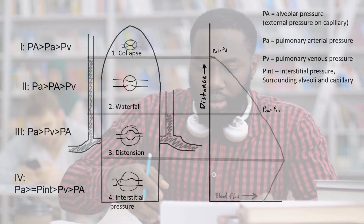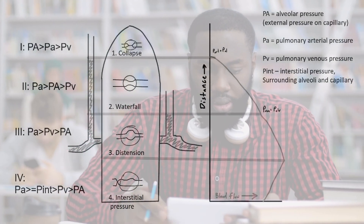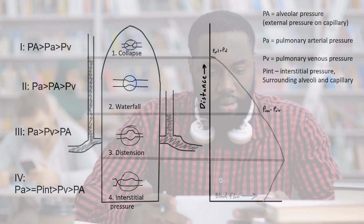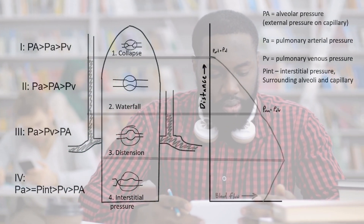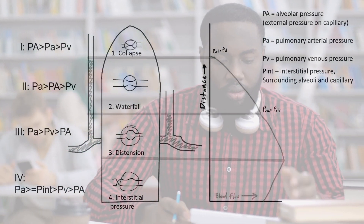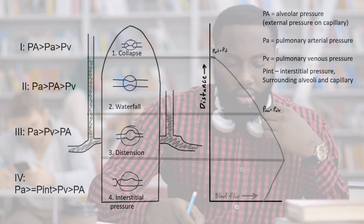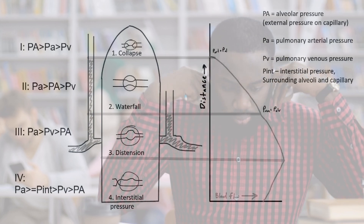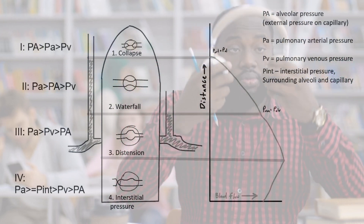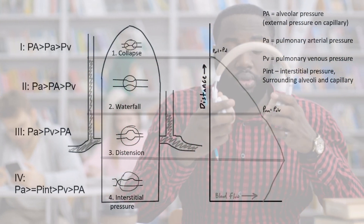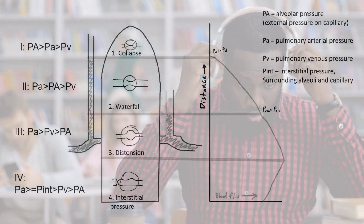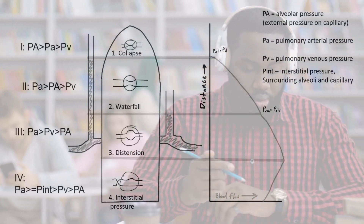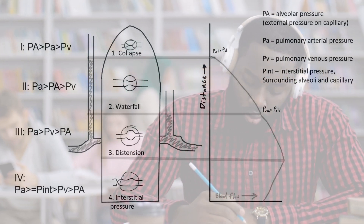You might be thinking, lung physiology again? But stay with me — we'll make it practical for your next OR case. Picture the lungs as a four-story building, where each floor represents a lung zone with different air and blood flow. Just like a building, changes on one level affect the others.